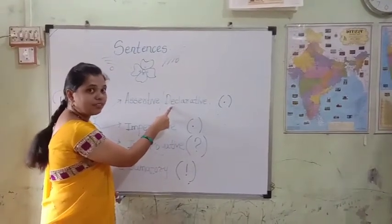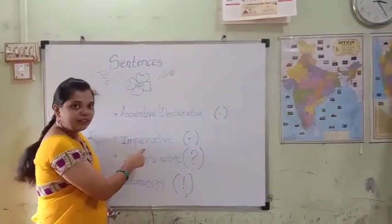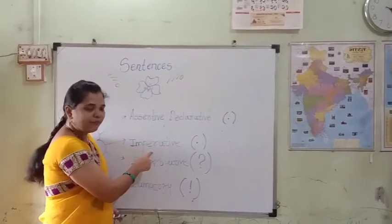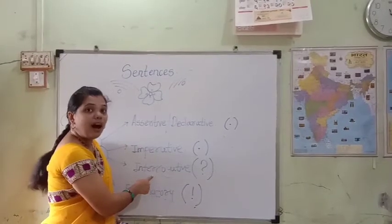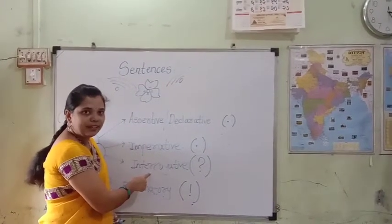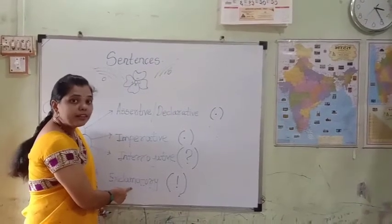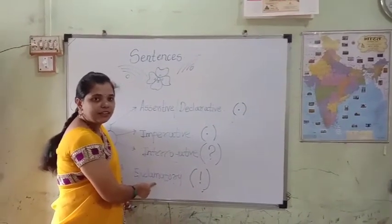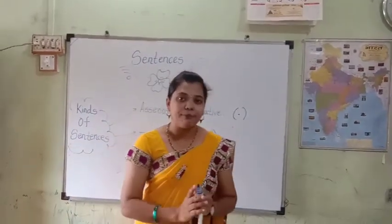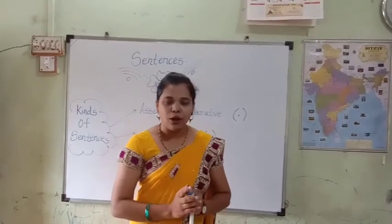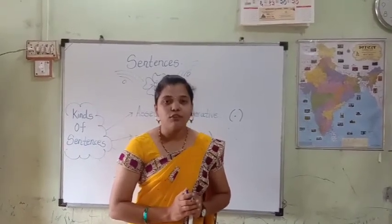Number one: declarative sentence — when we want to state something, we use a declarative sentence, which ends with a full stop. Imperative sentence — whenever we want to request, offer advice, or give an order, we use an imperative sentence, and it also ends with a full stop. Interrogative sentence — whenever we want to ask a question, we use an interrogative sentence, which ends with a question mark. Exclamatory sentence — whenever we want to communicate with full of energy and strong feelings, we use an exclamatory sentence, and it ends with an exclamation mark.